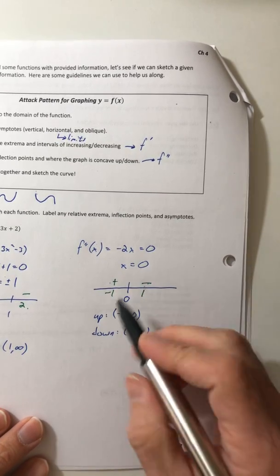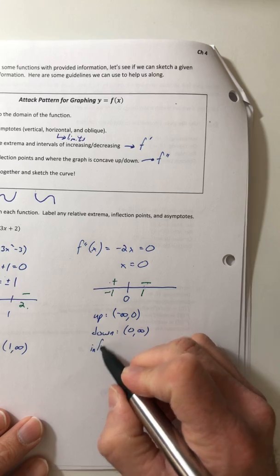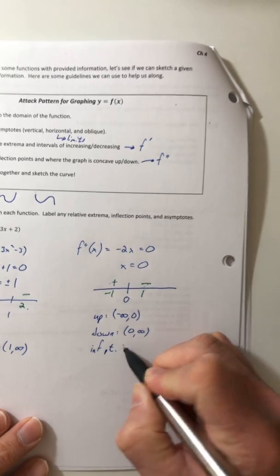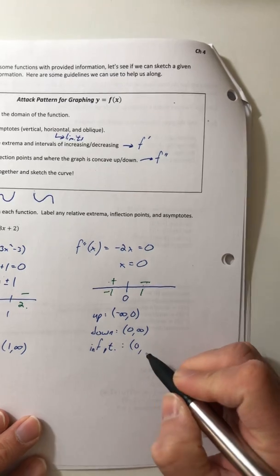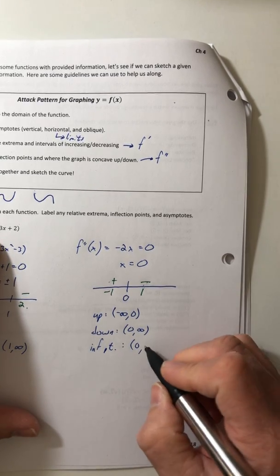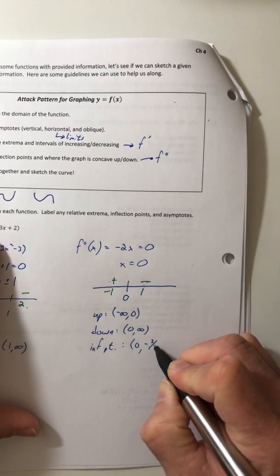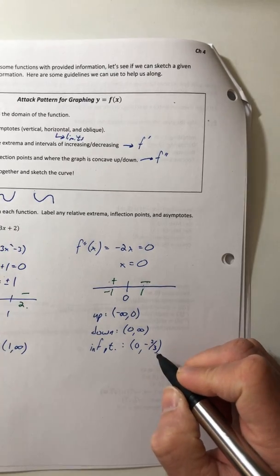So now you have an actual inflection point, because the concavity did change, and so it's occurring when x is zero. So if you plug that right back into your function, the y value is a negative two thirds.